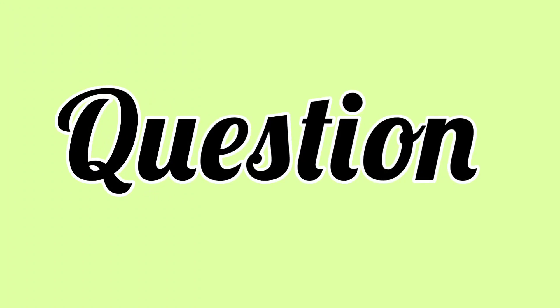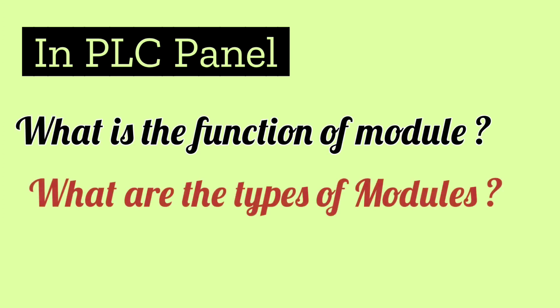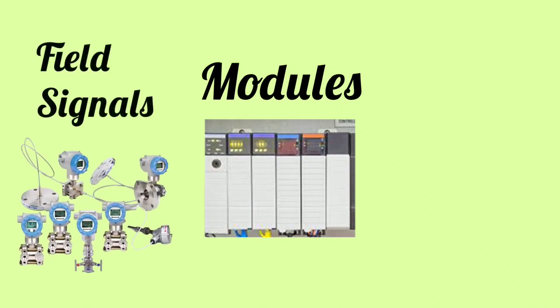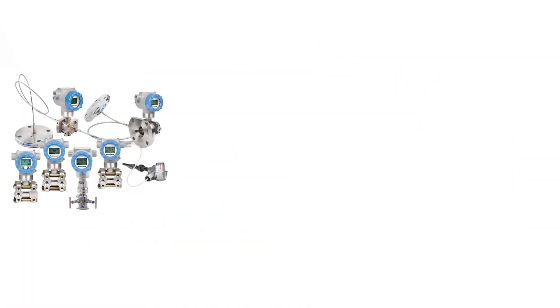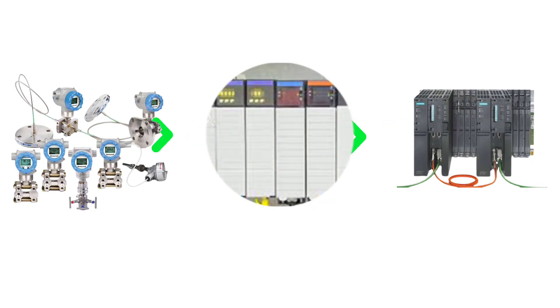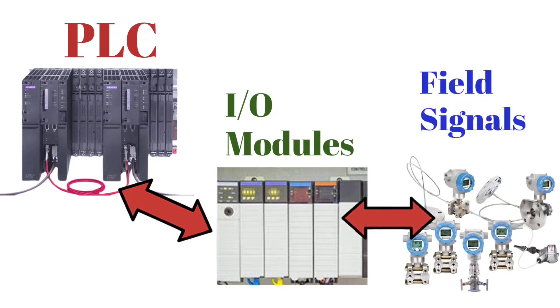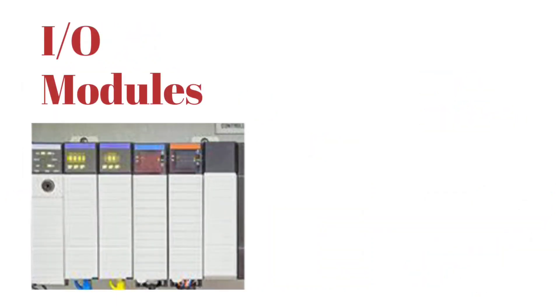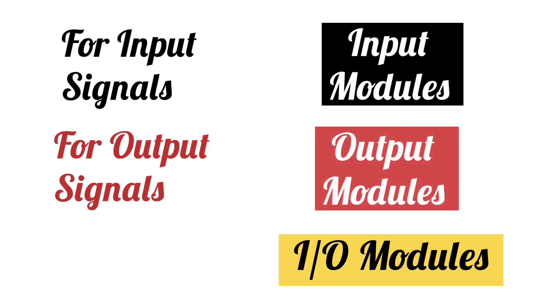The next question that can be asked: In a PLC-DCS panel, what is the function of modules? What are the types of modules? Modules provide interfacing between field signals and the PLC. Field signals are not connected directly to the PLC but are connected through modules. The signal flow is: PLC → I/O modules → field signals. I/O modules means input-output modules — input modules for input signals, output modules for output signals. Combined, these are called I/O modules, also known as cards.